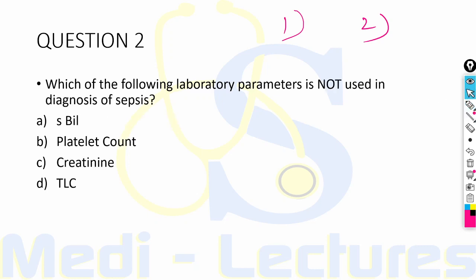Second question: which of the following laboratory parameters is not used in the diagnosis of sepsis? Serum bilirubin, platelet count, serum creatinine, or total leukocyte count? Let's see who can answer both of these questions.